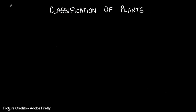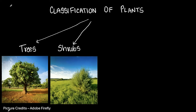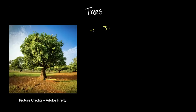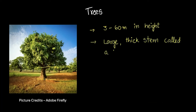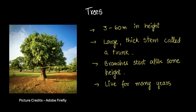Now we come to the second part of the video: classification of plants into different types. Plants are classified into trees, shrubs, herbs, and vines. Trees are the largest, ranging from 3 to 60 meters in height. They have a thick stem called the trunk, and branches start after a particular height. Trees live really long — it could be 10, 20, 40 years or even a few centuries. Examples are mango trees, pine trees, and neem trees. Shrubs are much smaller, usually ranging from just 2 to 3 meters. They don't have a trunk, but they do have a hard woody stem, and their branches start off really close to the ground. Examples are tulsi and rose.